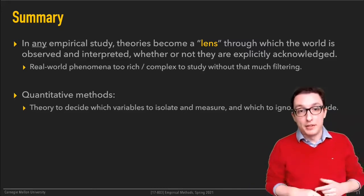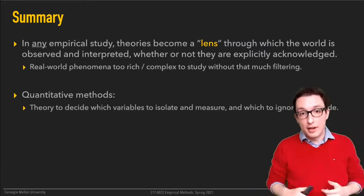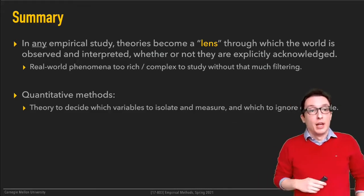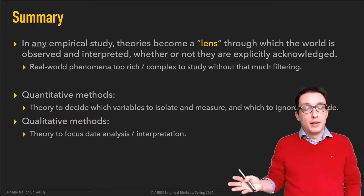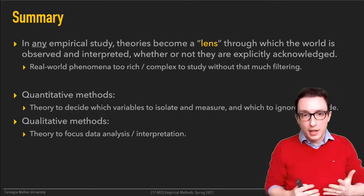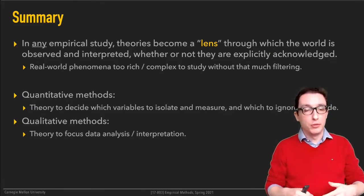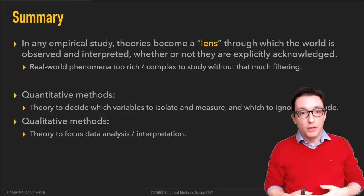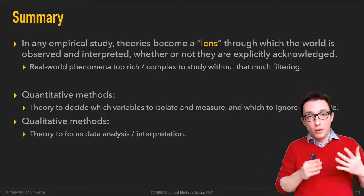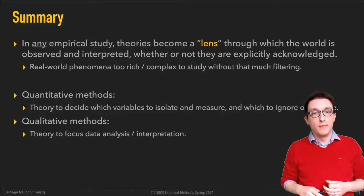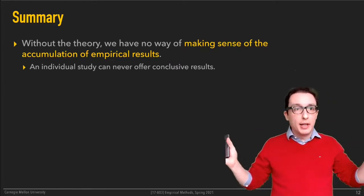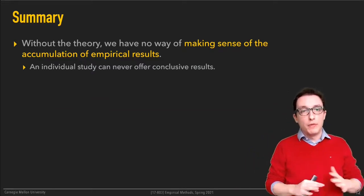Theory tells you which things may be confounding factors that could explain some relationship you're observing beyond what you hypothesize is the cause — you still have to measure and isolate those variables. If you're using qualitative methods, you can use theory to help focus your data analysis and interpretation: which things from your qualitative data do you focus on, try to interpret, code, abstract away from, build theory from — versus which things to ignore.